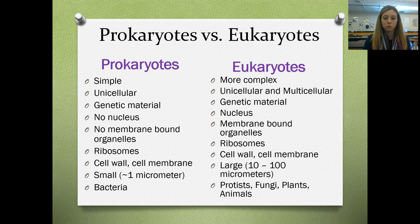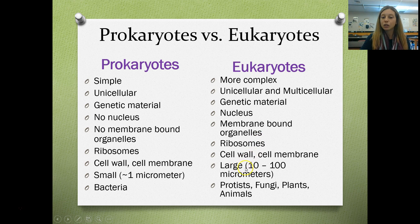Eukaryotic organisms have more complex cells. We have some unicellular organisms and some multicellular organisms. They contain genetic material just like prokaryotes, but they have a nucleus and membrane-bound organelles. They also have ribosomes, and some have cell walls. They all have cell membranes, but these are larger, and example organisms include protists, fungi, plants, and animals.